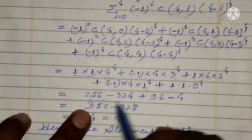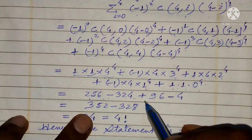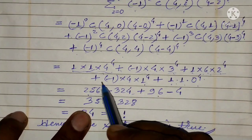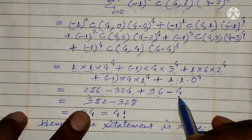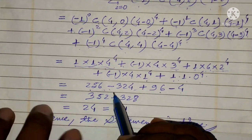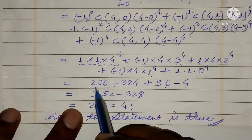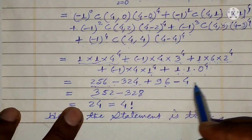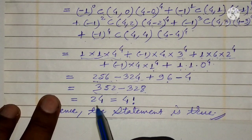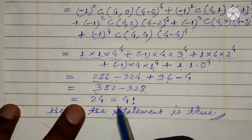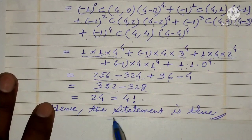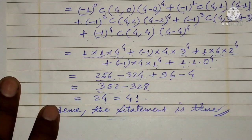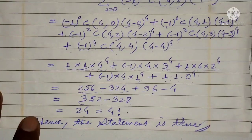So the total is: 256 minus 324 plus 96 minus 4 plus 0. That gives 256 + 96 = 352, minus 324 minus 4 = 328. So the answer is 352 minus 328 = 24, which equals 4 factorial. Therefore the statement is true. Thanks for watching.